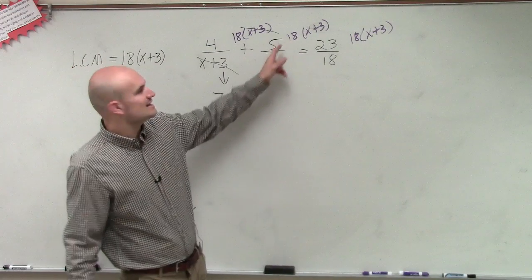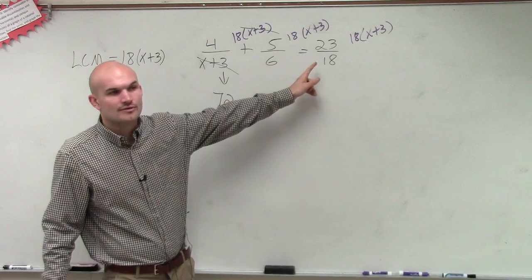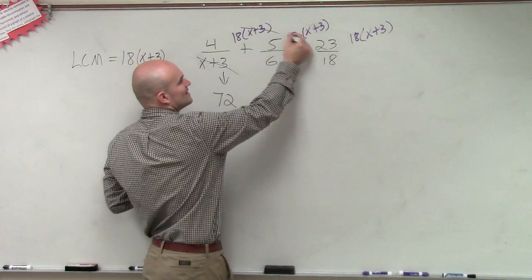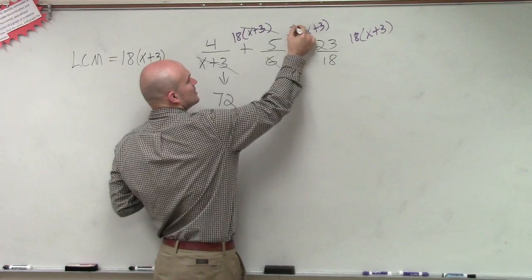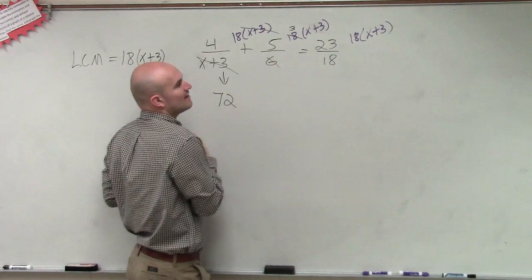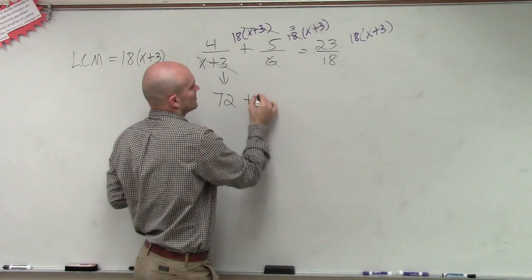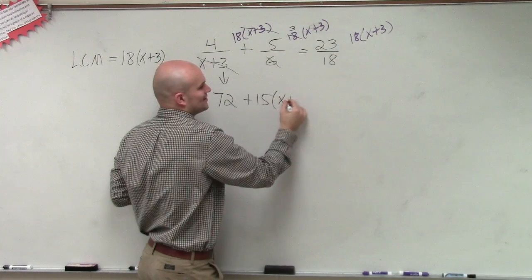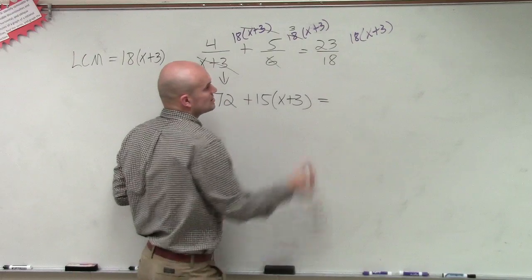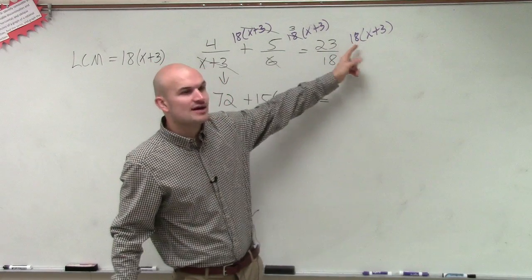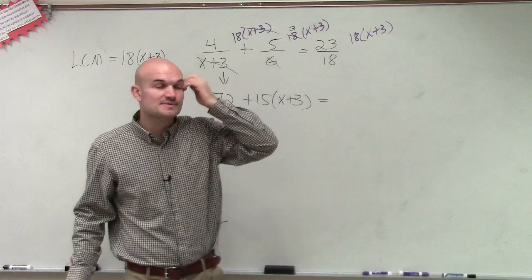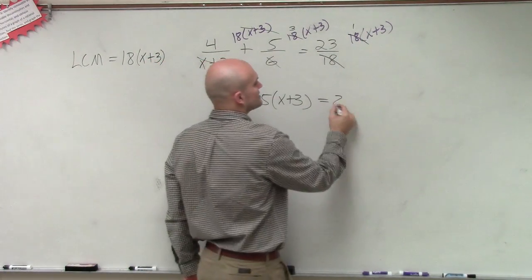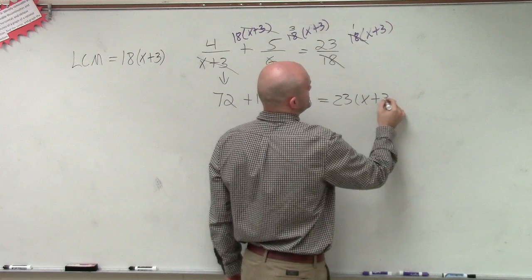So, now, 6 divides into 18 how many times? 3. 3 times 5 is? So, we could say 6 divided by 18. This just now turns to the number 3. 3 times 5 is 15. So, now I don't have a denominator, but it's 15 times x plus 3 equals, now I have 23, and now you have 18 divides into 18 how many times? 1. So, in general, I just have 23 times x plus 3.